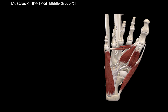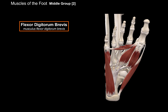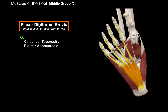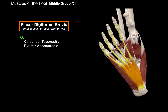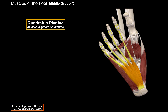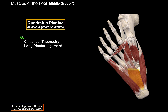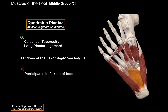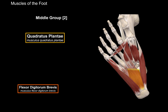Now let's cover the muscles of the middle group. One thing all of these muscles have in common is that they maintain the longitudinal arch of the foot, and they are all innervated by the lateral and medial plantar nerves. The first one is the flexor digitorum brevis, which originates from the calcaneal tuberosity and the plantar aponeurosis — the plantar ligament that is part of the fascia of the foot — and inserts at the base of the middle phalanx of the 2nd to 5th toes, producing flexion of those toes at the middle and proximal phalanges. Then we have the quadratus plantae, located underneath the flexor digitorum brevis, which originates from the calcaneal tuberosity and the long plantar ligament, and inserts at the tendons of the flexor digitorum longus, participating in flexion of the toes.